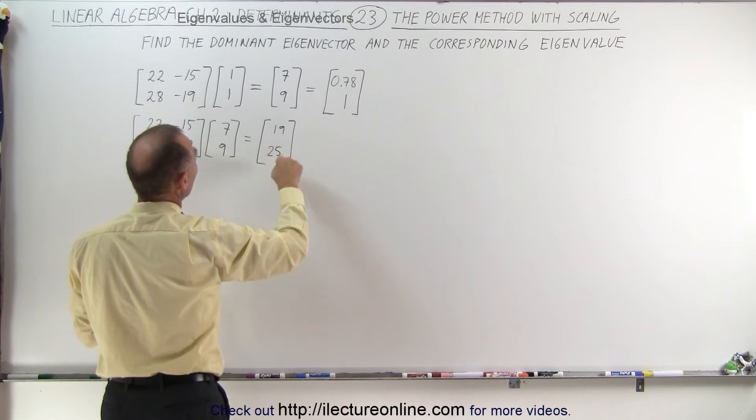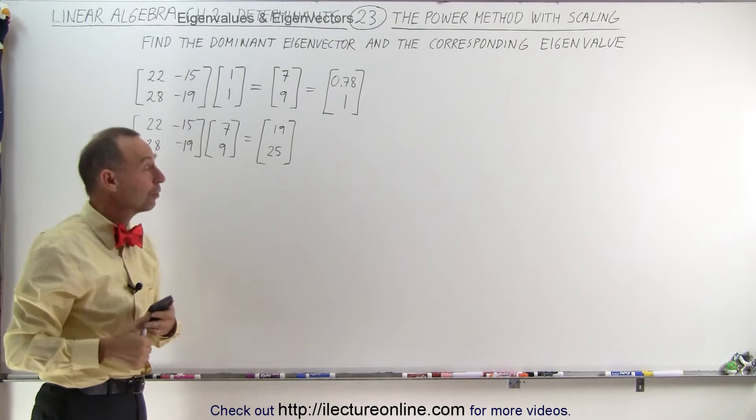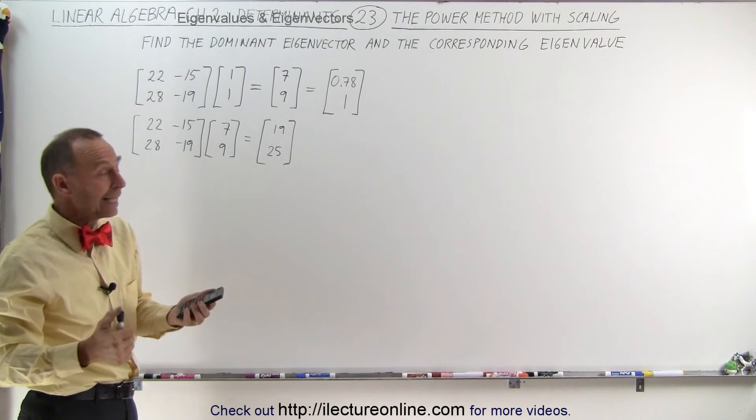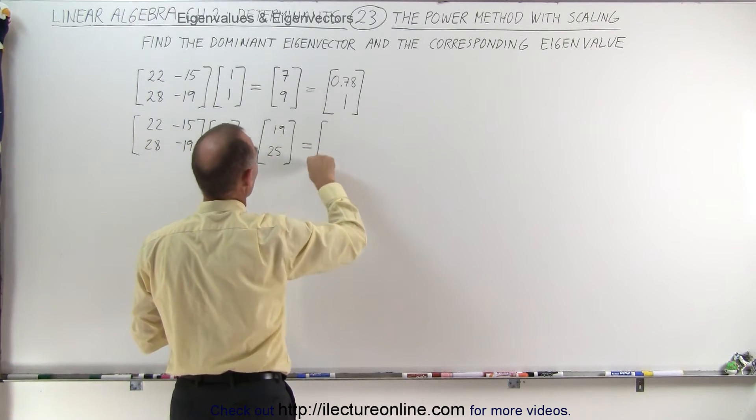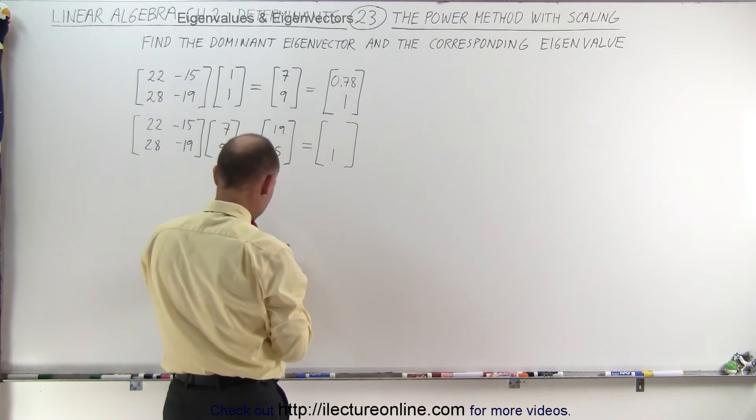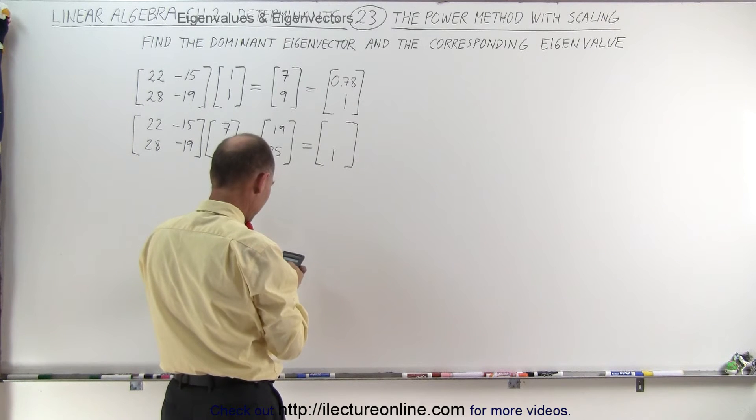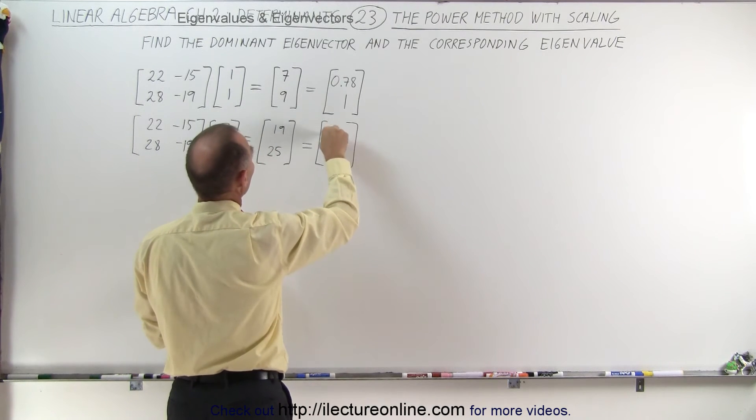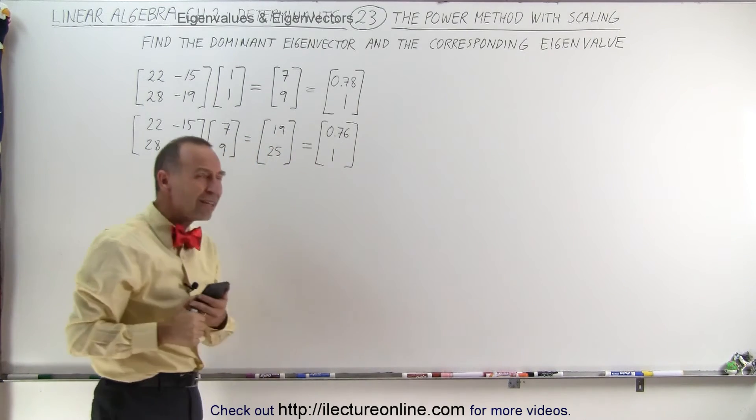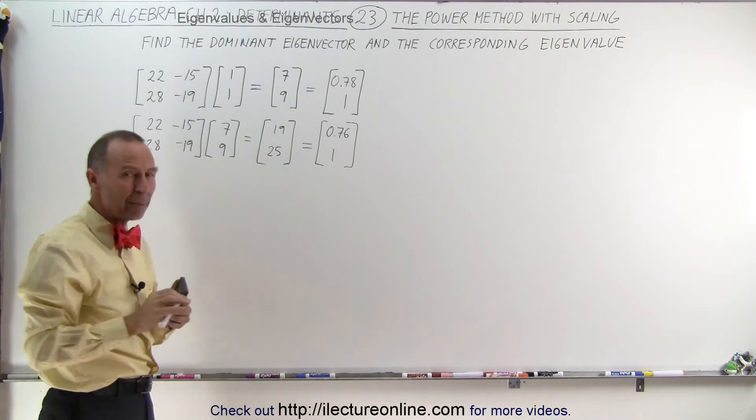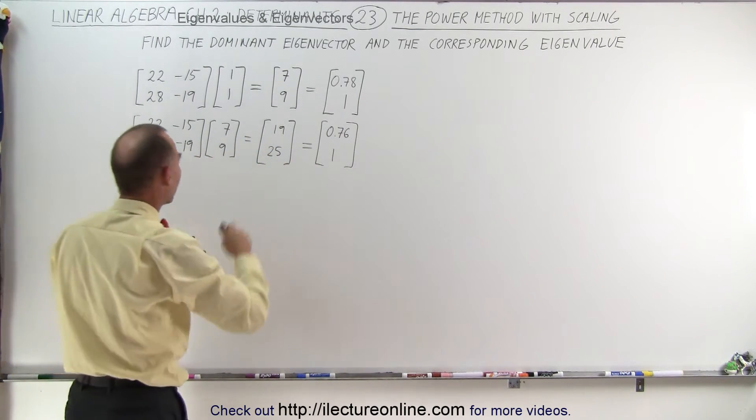Again notice it would be difficult to see what that converges to but if we use scaling it makes it a little bit easier. We'll make the 25, we turn the 25 into a 1 by dividing 25 by 25 and we do the same with 19. 19 divided by 25 gives us 0.76. We're beginning to see some convergence. We'll need maybe one more try to see what this ends up being.